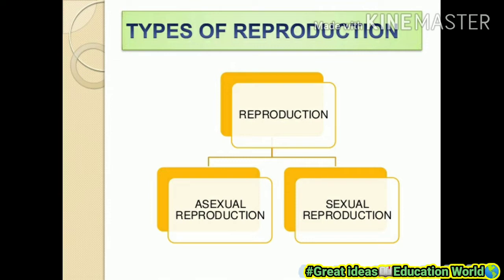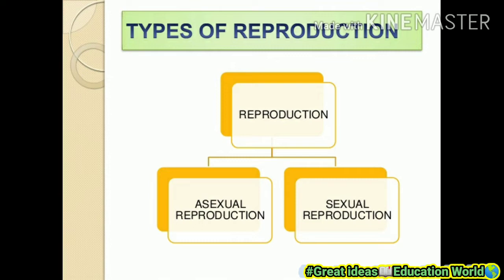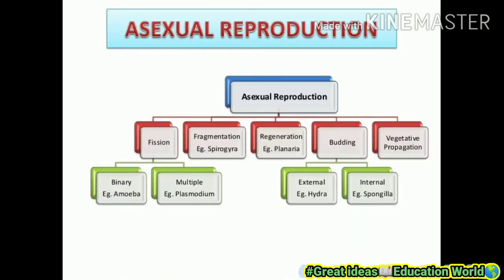Next, we understand about types of reproduction. Reproduction is of two types: asexual reproduction and sexual reproduction. Asexual reproduction can be divided into two parts: 'a' meaning not, and 'sexual' meaning involving two parents. In asexual reproduction, two parents or male and female cannot take part. Only a single parent takes part — it cuts, regenerates, and forms offspring. Asexual reproduction has five types.